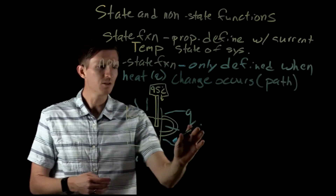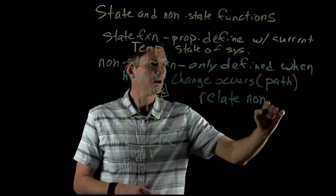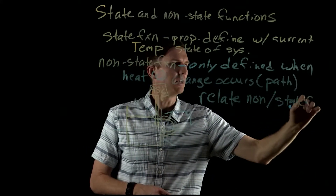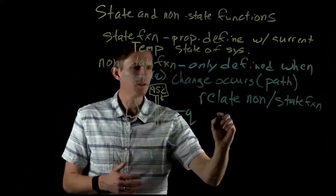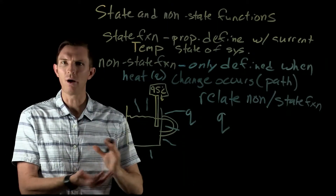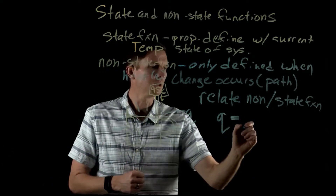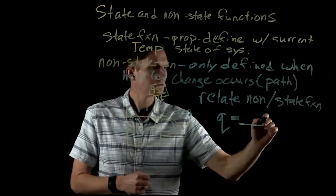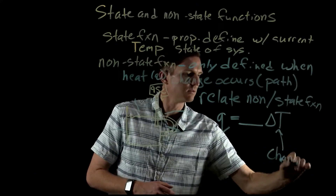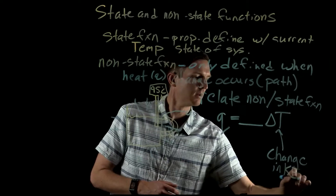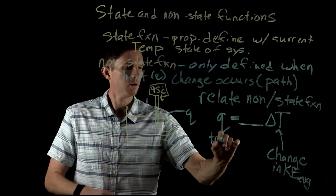Heat is defined as the transfer of kinetic energy, and temperature is a measurement of average kinetic energy. So if our average kinetic energy changes, kinetic energy is going to transfer. We can relate a non-state function with a state function: heat is equal to some multiplier times a change in temperature, because our change in temperature is related to a change in average kinetic energy, which relates to the transfer of that kinetic energy.